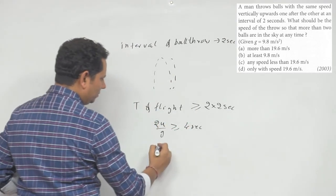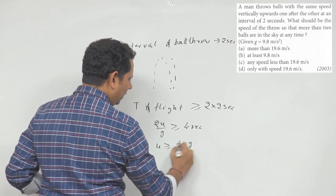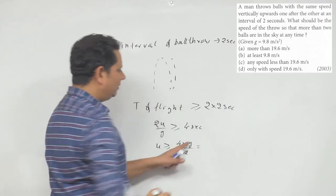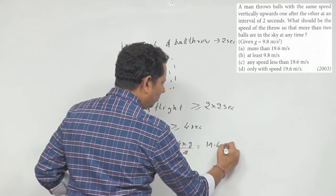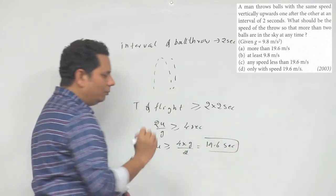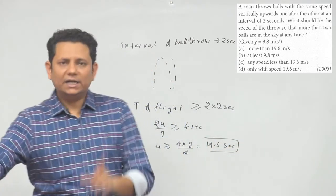Putting in the values, u should be greater than or equal to 4 multiplied by g divided by 2. Taking g value as 9.8, the value becomes 19.6 meter per second. So your minimum velocity should be 19.6. If it's less than that, this situation won't be satisfied.